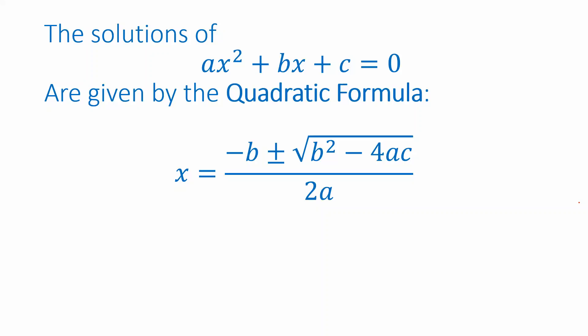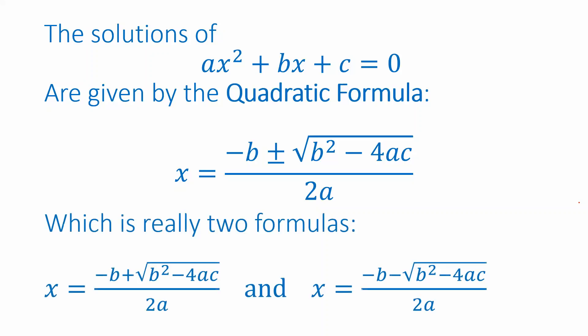To use this formula, all you have to do is figure out the values of a, b, and c to plug in. You should bear in mind that this is really two formulas — the plus or minus is just shorthand, because most quadratic equations have two solutions. We get one solution by using the plus sign and the other by using the minus sign, though sometimes we'll want to explicitly write out both separate solutions.